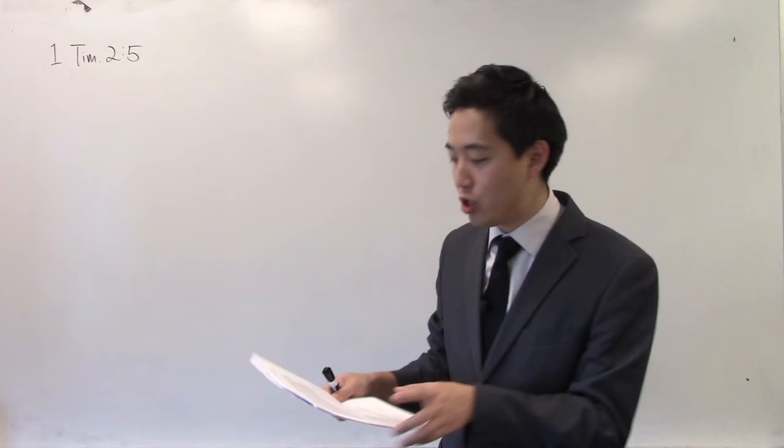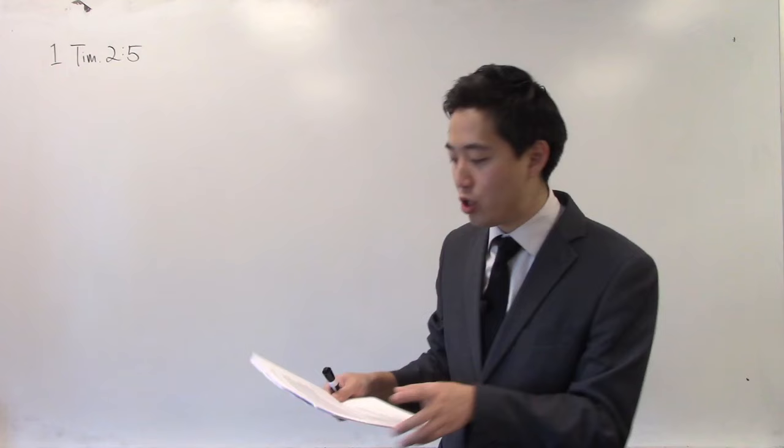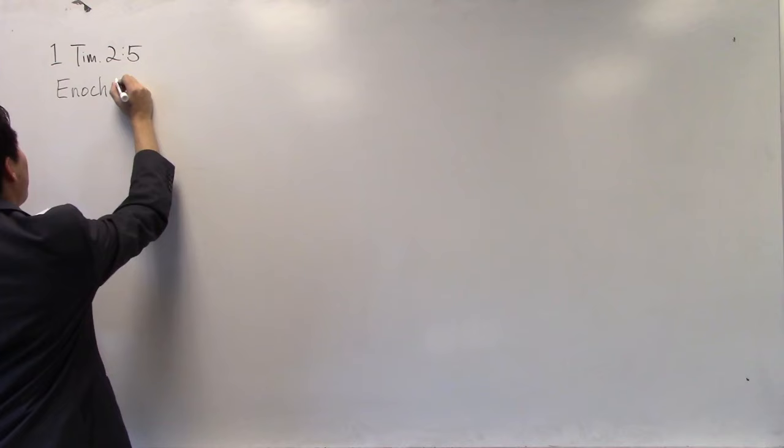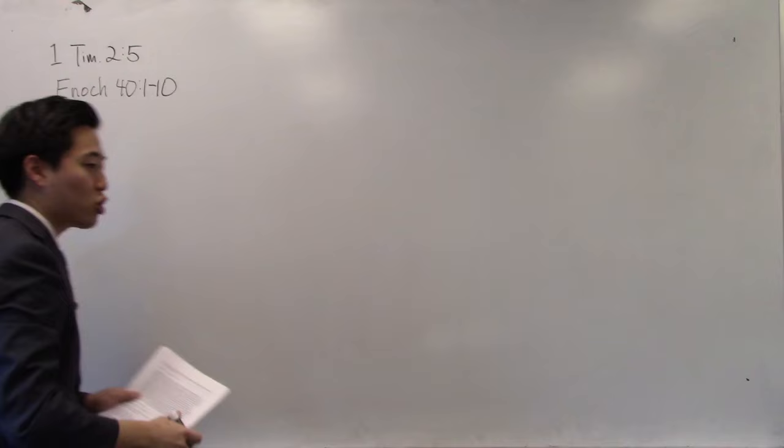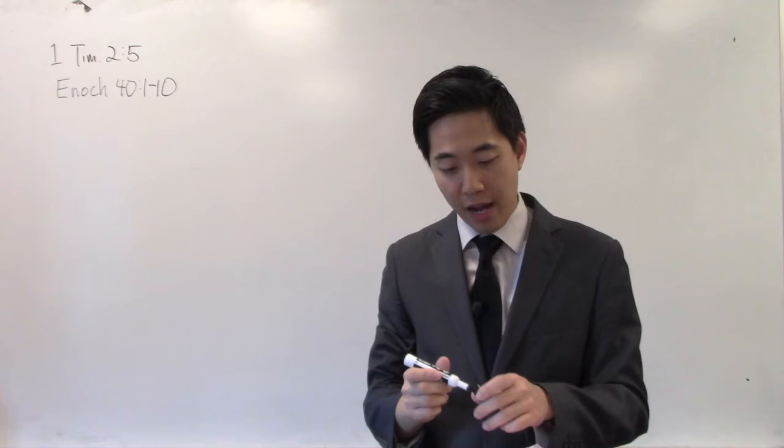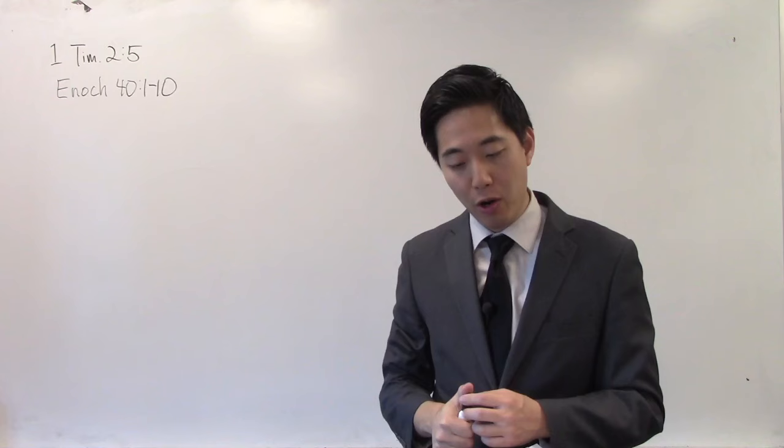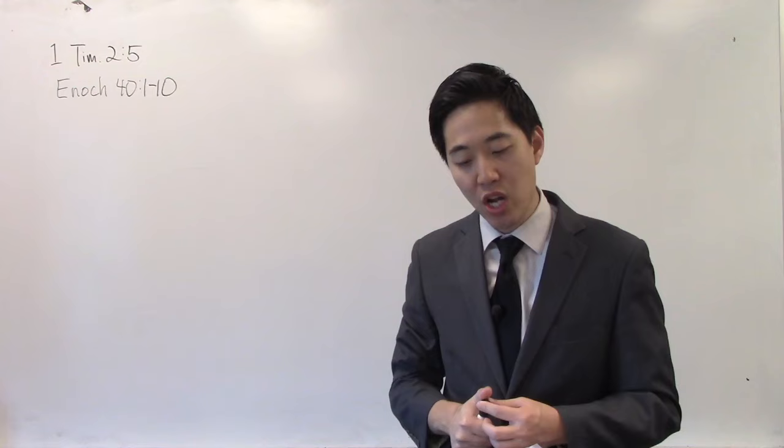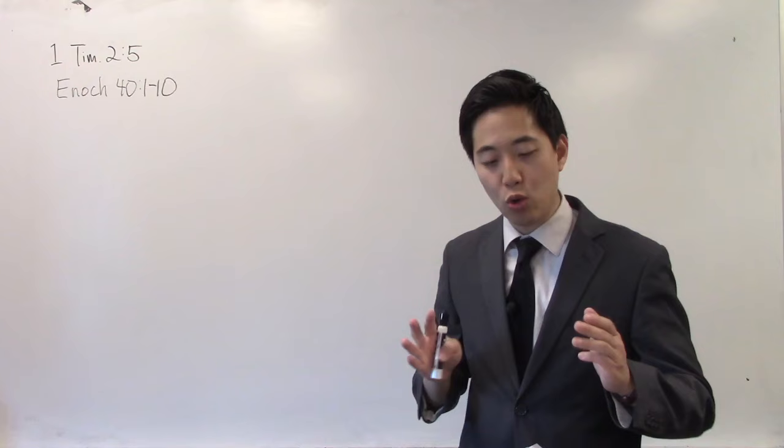So, the first thing is Enoch chapter 40 verses 1 through 10. And then, this passage shows that there is a person that's interceding and it's not Jesus Christ. Now, some people, they think that I misquoted this verse. I didn't. So, what I'm going to do is I'm going to put the whole verse here and try to read it in context. After that, I saw thousands of thousands and ten thousands times ten thousand. I saw a multitude beyond number and reckoning who stood before the Lord of Spirits. On the four sides of the Lord of Spirits, I saw four presences different from those that sleep not. And I learned their names. For the angel that went with me made known to me their names and showed me all the hidden things. So, basically, there are four different angels and it's going to discuss what these four angels are.